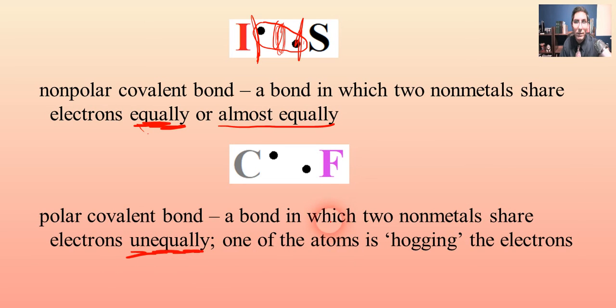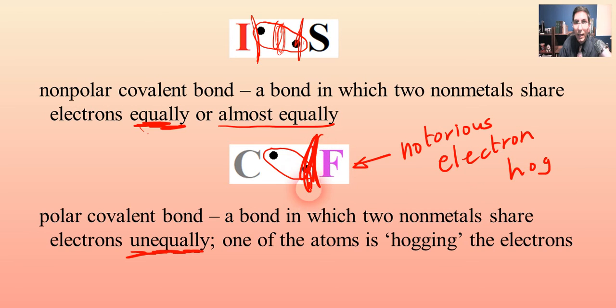What's going to happen is that these two electrons will have a covalent bond that they will be shared, but fluorine is known as a notorious electron hog. Fluorine is going to be hogging these electrons over here. It's going to be taking those electrons almost all the time. Carbon hardly ever gets to use those electrons. Carbon is sad over here because it hardly gets to use those electrons. This is a very unequal sharing relationship. It's a polar bond. There's a pole here. It's like one of those atoms is hogging those electrons. This side tends to be kind of negative because those electrons are over there all the time. This side is kind of positive.